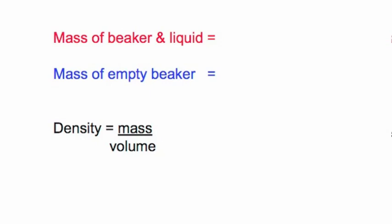The mass of the empty beaker was 50.0 grams. The mass of the beaker and the liquid together had a mass of 99.9 grams. Do the subtraction and the mass of just the water is 49.9 grams.